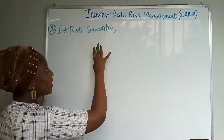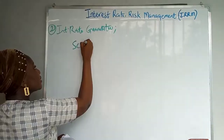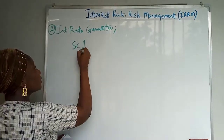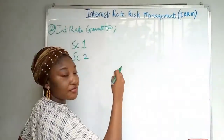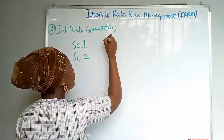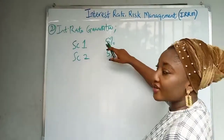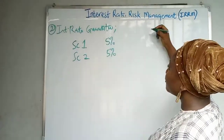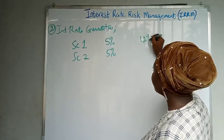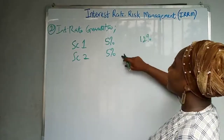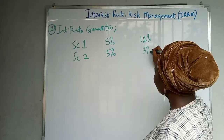I'm going to explain interest rate guarantees with two scenarios. There's a guaranteed agreed rate — let's say five percent. In scenario one, the reference interest rate in the future becomes 12 percent, and in scenario two it drops to three percent.